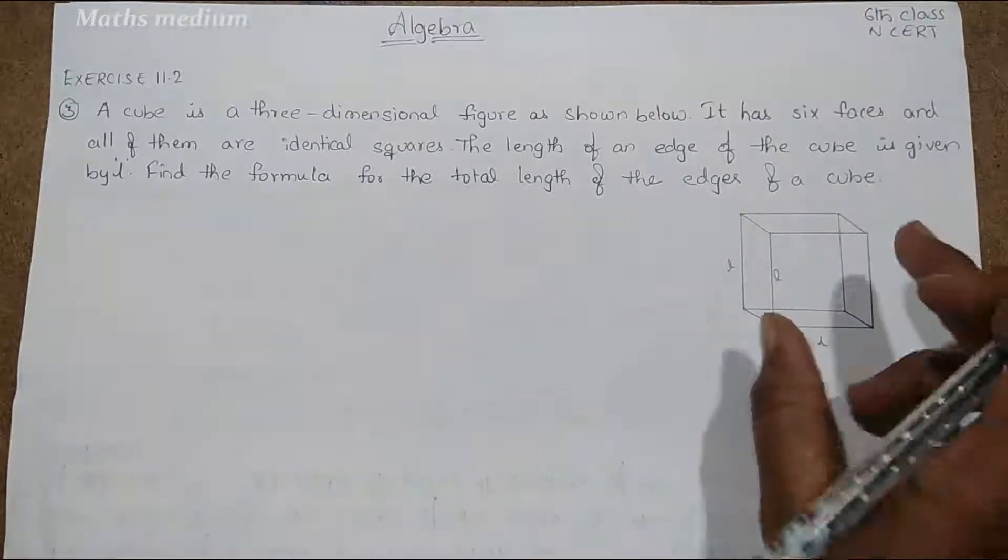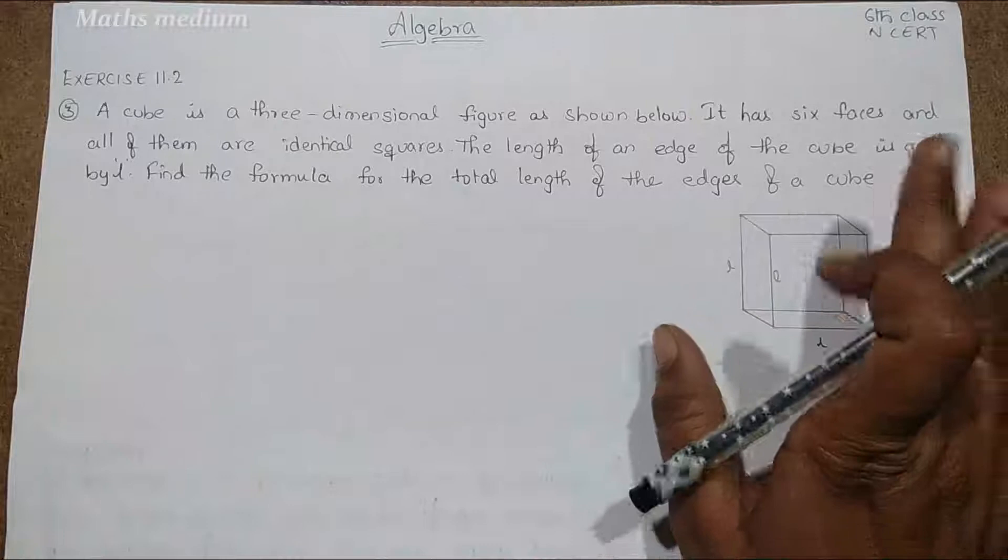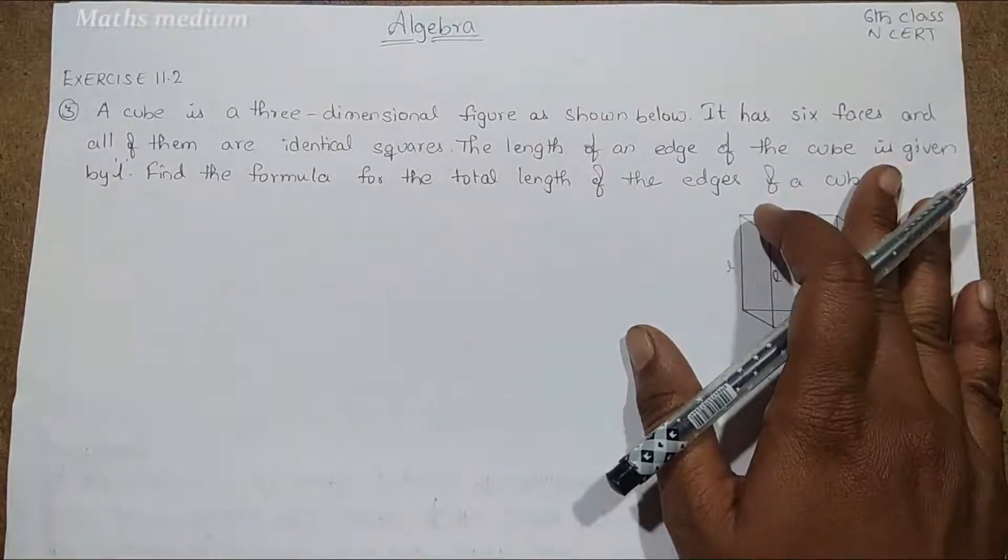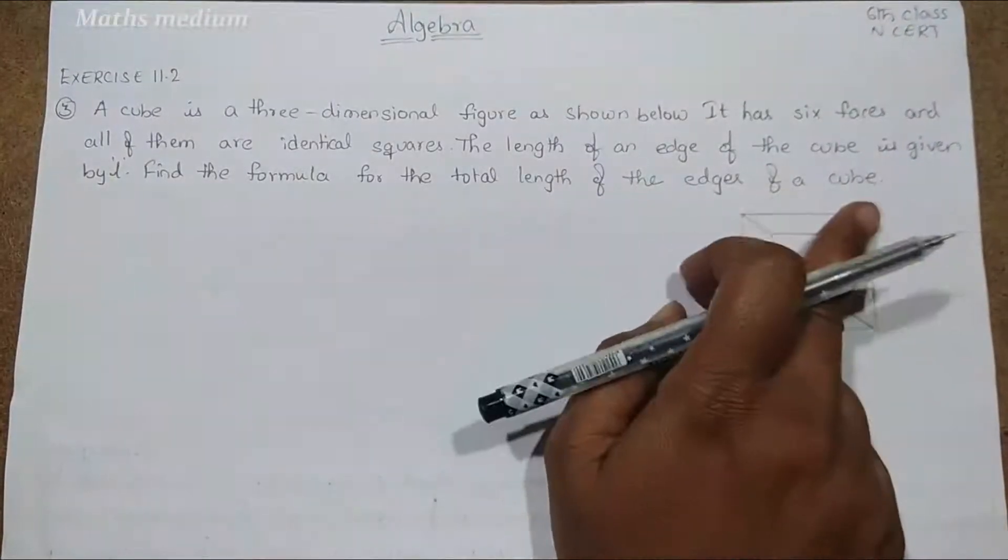This is the cube with equal sides and equal edges and equal faces also. We have to find the total length of the edges of the cube.